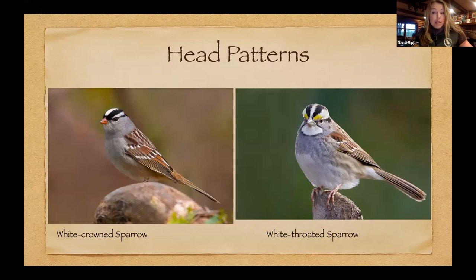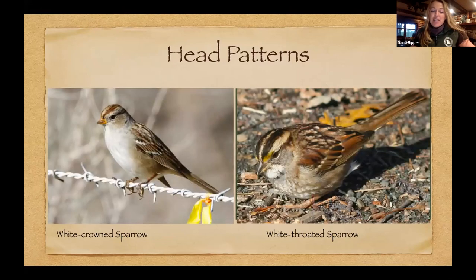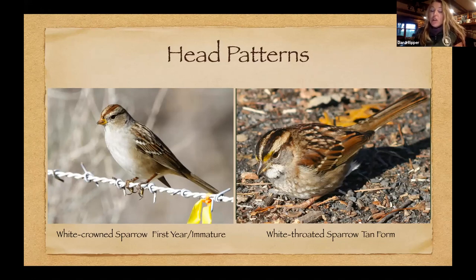To get a little more complicated for intermediate birding — these are the first-year or immature plumage of the white-crowned sparrow and the tan form of the white-throated sparrow. It isn't a male-female thing in either bird; for the white-crowned it's just a younger bird, and for the white-throated there are two different color forms. These two individuals look even more alike, and if you were just looking at color you might get tripped up. So looking at patterns — what one has that the other doesn't — is key.